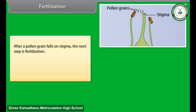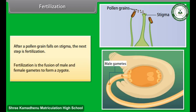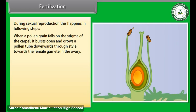After a pollen grain falls on the stigma, the next step is fertilization. Fertilization is the fusion of male and female gametes to form a zygote. During sexual reproduction, when a pollen grain falls on the stigma of the carpel, it bursts open and grows a pollen tube downwards through the style towards the female gamete in the ovary.